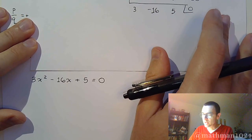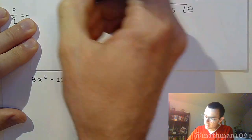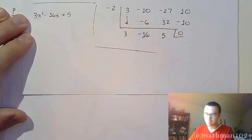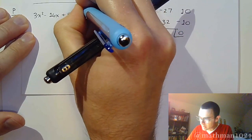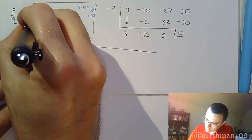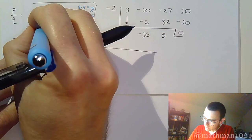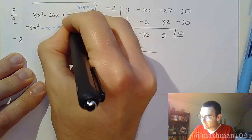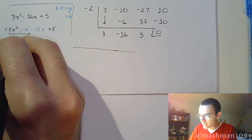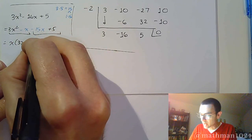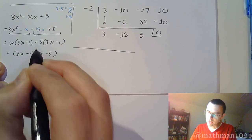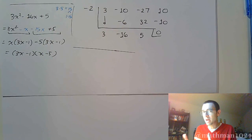Using the AC method to factor 3x² - 16x + 5: multiply A × C = 3 × 5 = 15, and factors of 15 that add to 16 are 1 and 15. Rewrite as 3x² - 1x - 15x + 5, then factor by grouping: x(3x - 1) - 5(3x - 1), giving us (3x - 1)(x - 5).